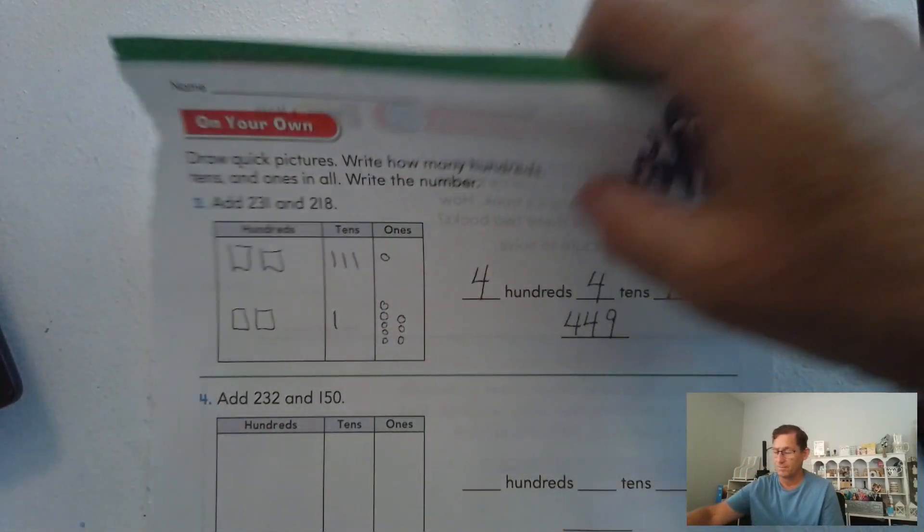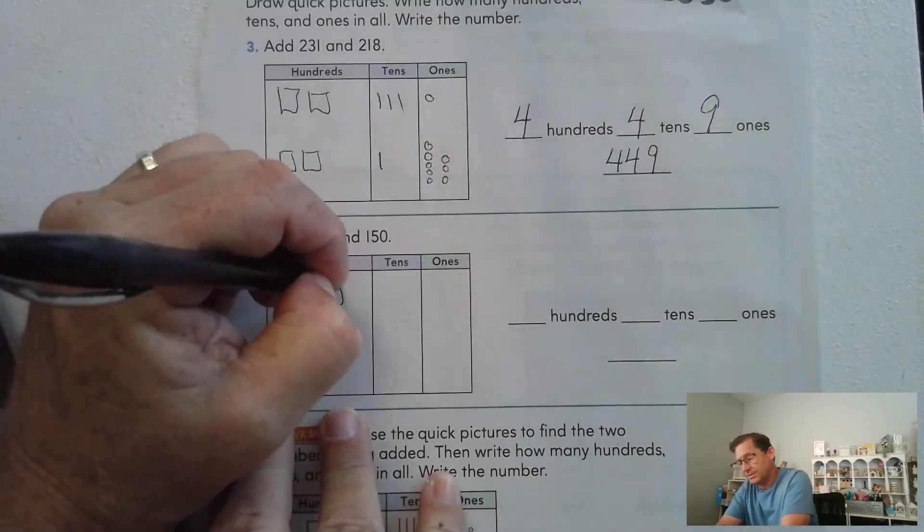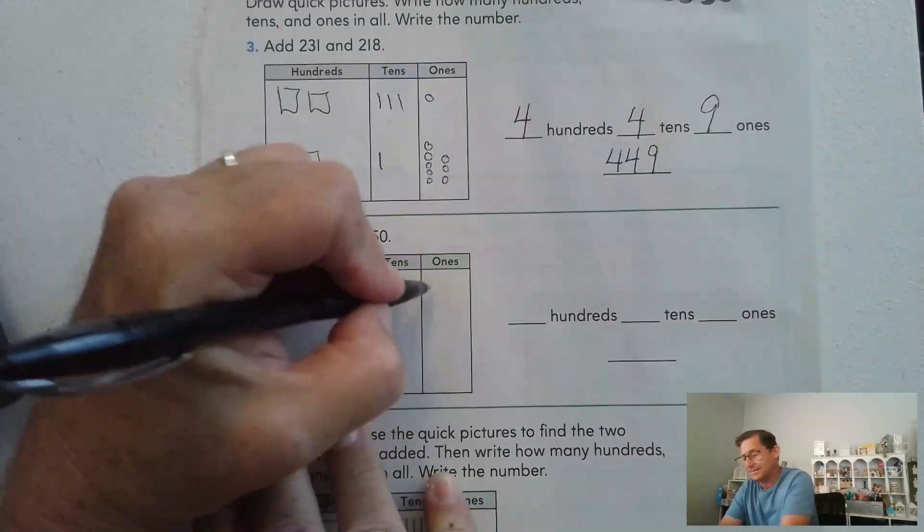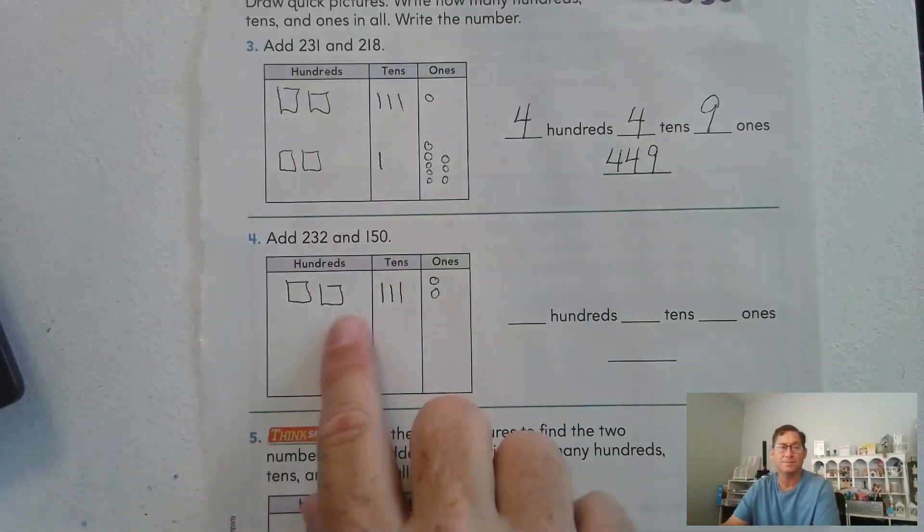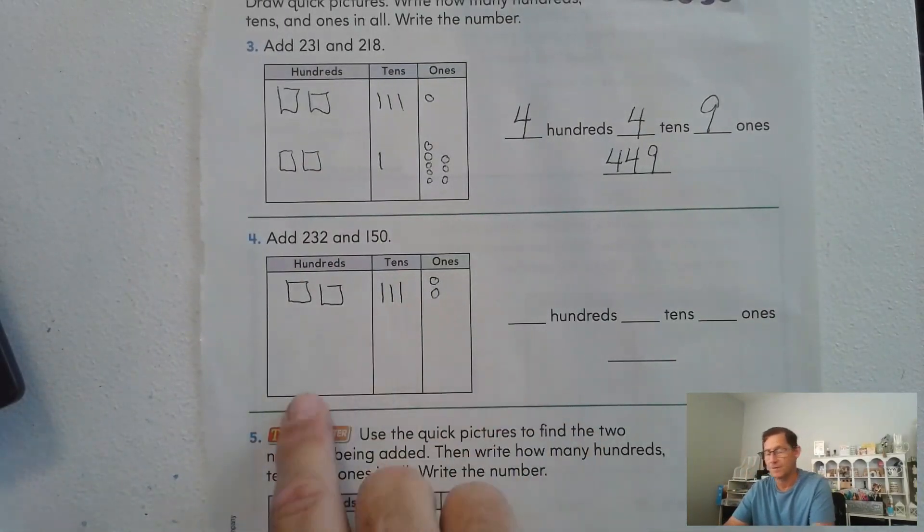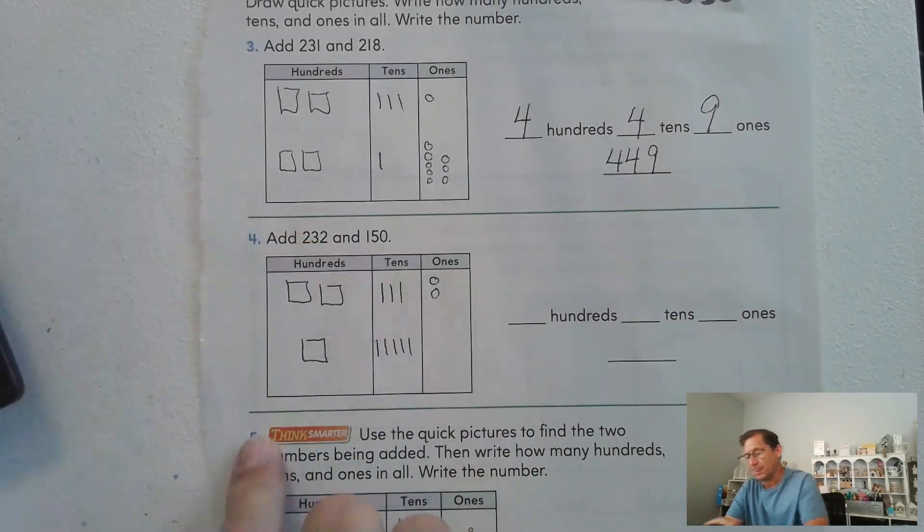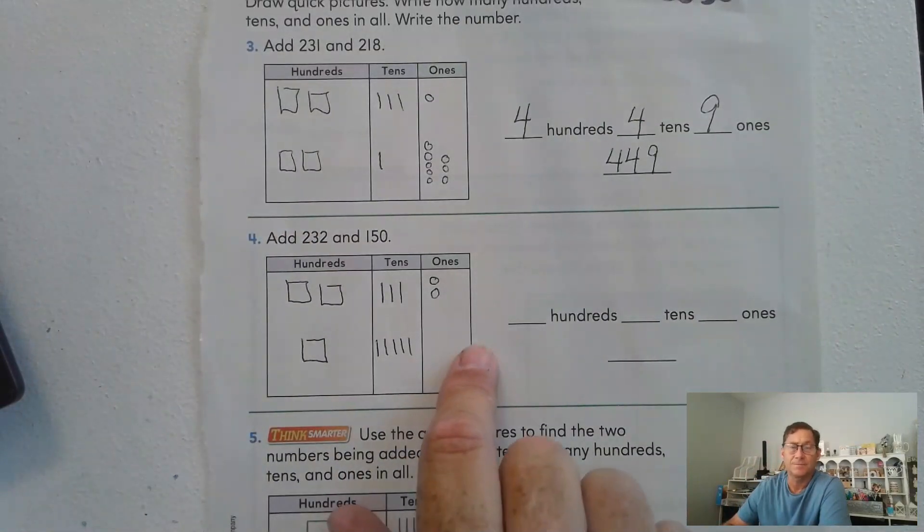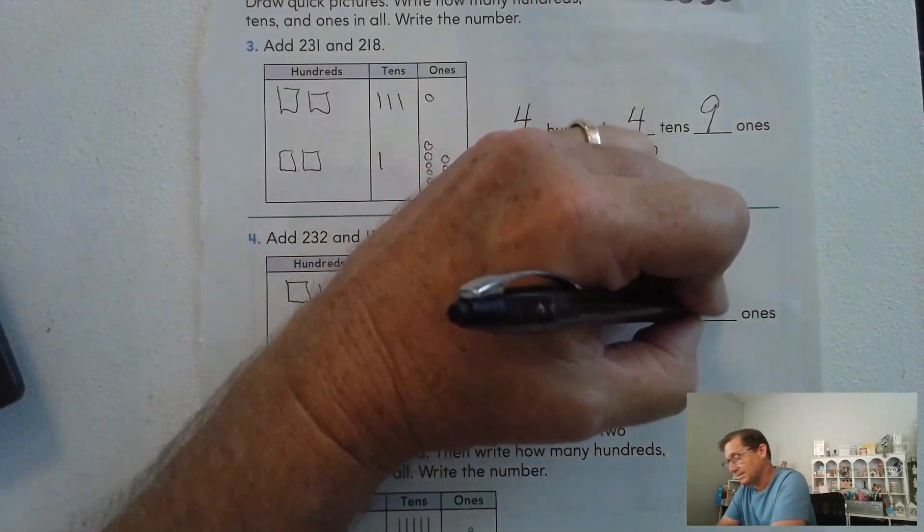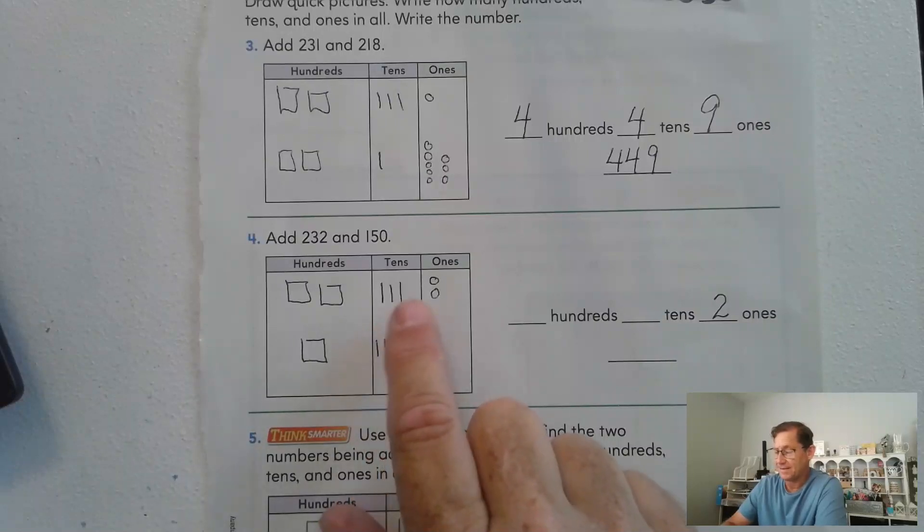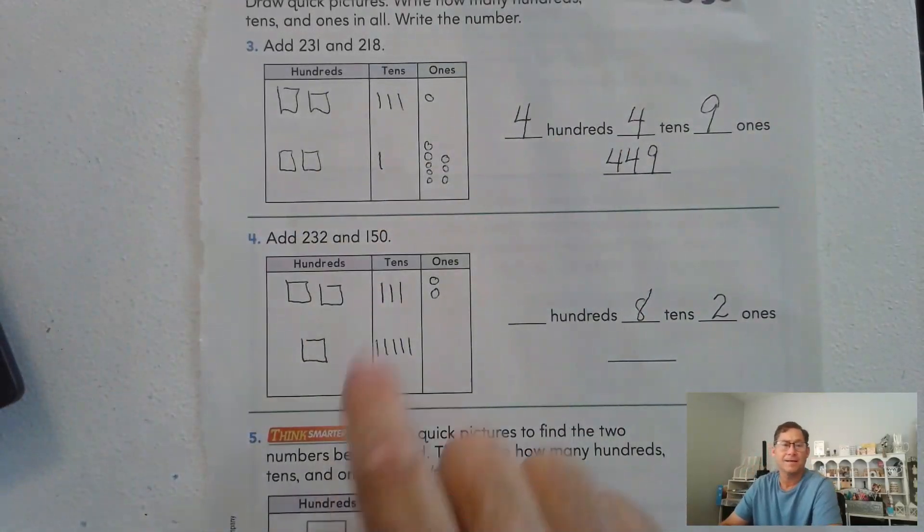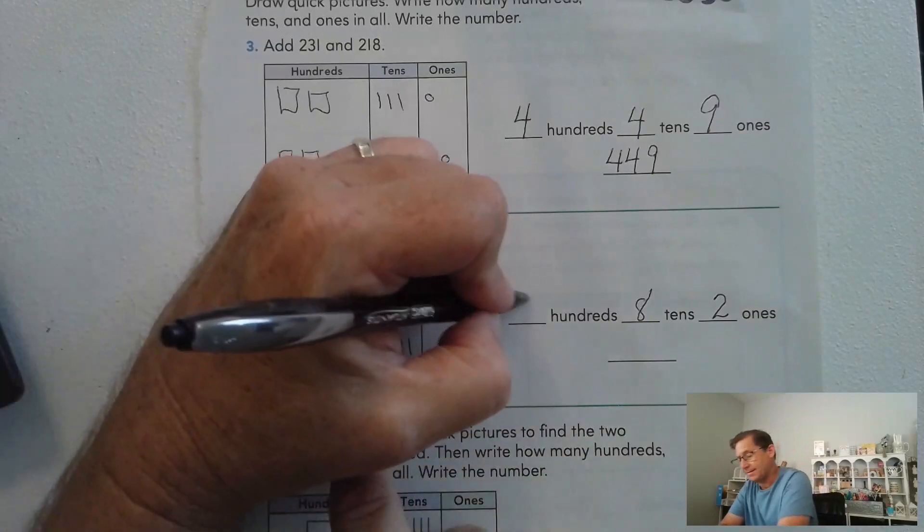Number four. We're going to add 232 and 150. So two hundreds, three tens, and two ones, that is a quick picture for 232. 150, one hundred and five tens, there aren't any ones. So we have a total of just two ones, we have five, six, seven, eight tens, and we have three hundreds. So we have 382.